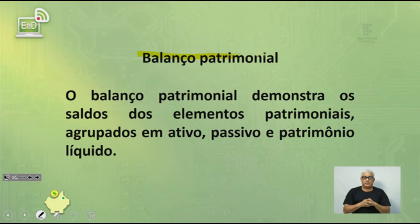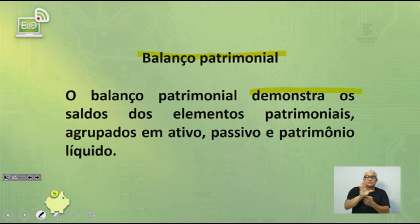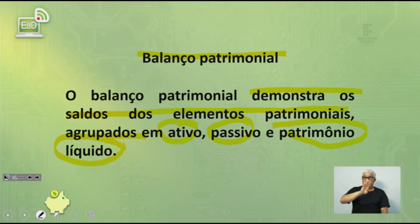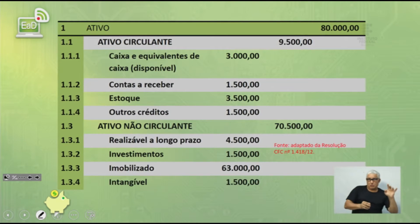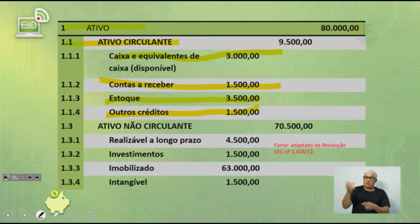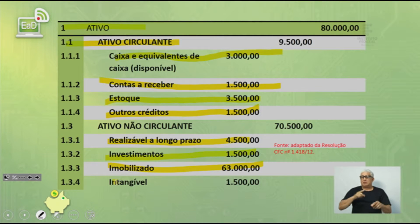O balanço patrimonial, desde a disciplina de contabilidade geral, demonstra os saldos dos elementos patrimoniais agrupados em: ativo, passivo e patrimônio líquido. O ativo apresenta circulante — com contas como caixa e equivalente de caixa, contas a receber, estoque, outros créditos — além de realizável a longo prazo, grupo de investimentos, imobilizado e intangível.